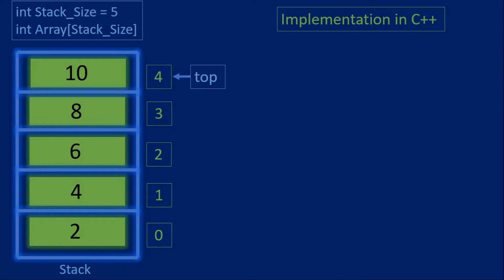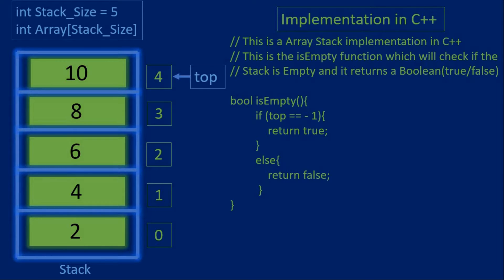Now the next function will check if the stack is empty. From the previous videos you will remember that we first create an instance of a stack. The constructor will initialize the variable top to negative 1 because the stack is still empty when it is created. So for this function we will check if top is equal to negative 1, and if it is, it means that the stack is empty and we return true. But in our example the variable top is equal to 4, so we enter the else statement and return false, as the stack is not empty.